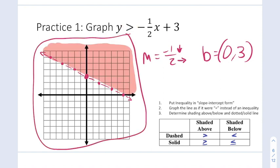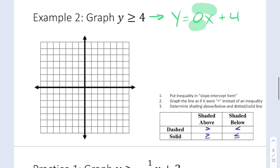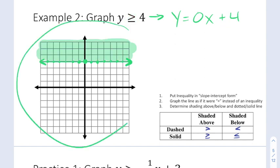This problem seems a little bit tricky because there's no x-term. So you might not think this is in slope-intercept form. But remember from first semester, that really just means that our slope is zero, making the x-term disappear. This is really the graph of a horizontal line starting at a y-value of 4. Now because there's a line underneath, this is going to be a solid line, and the greater than is going to tell me to shade above. So this would be our graph.